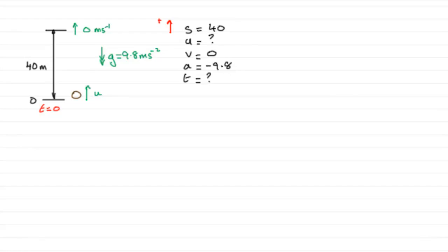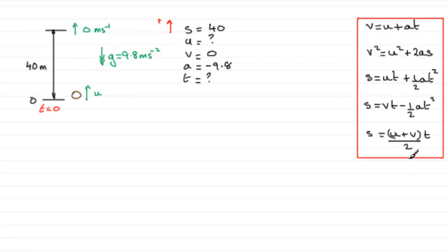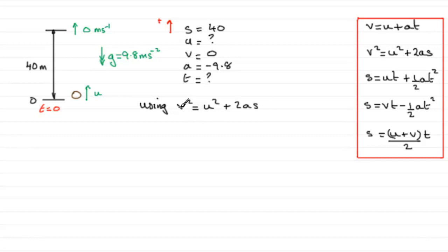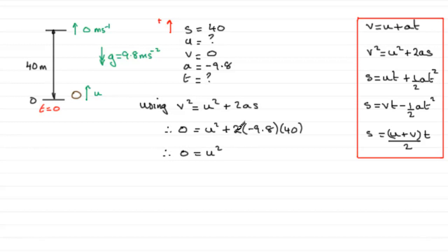We're looking for an equation that hasn't got t in it, and it has to be this one: v squared equals u squared plus 2as. Using v squared equals u squared plus 2as, v squared is 0, we've got u squared that we're trying to find, plus 2 times a, which is minus 9.8, times s, the displacement, which is 40.